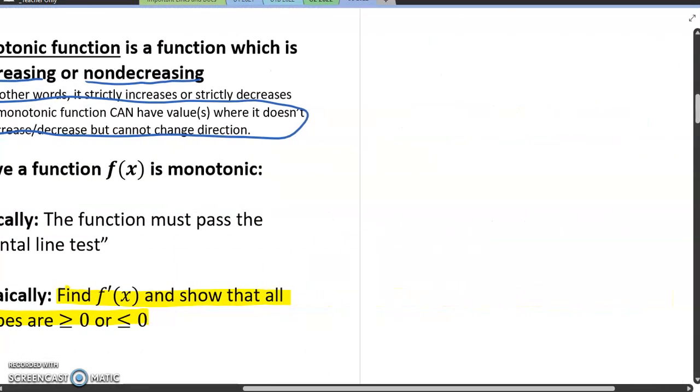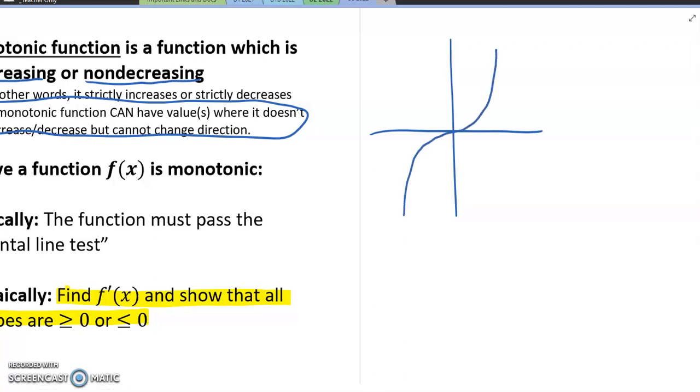A good example to prove this to you would be the graph of x cubed. Graph of x cubed looks like this. And what we can see is, okay, well, it's increasing, it's increasing, it's increasing, but right here at zero, it doesn't increase, okay? But, and you can prove that, by the way, if you take the derivative and set it equal to zero, you would get a horizontal tangent line. However, it doesn't change direction. It doesn't ever start to decrease. So therefore, it continues to increase. Therefore, this will be an example of something that is monotonic. So the graph of x cubed, at least y equals x cubed, is considered a monotonic function.